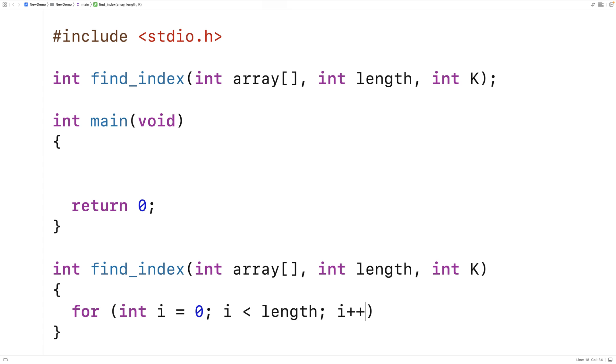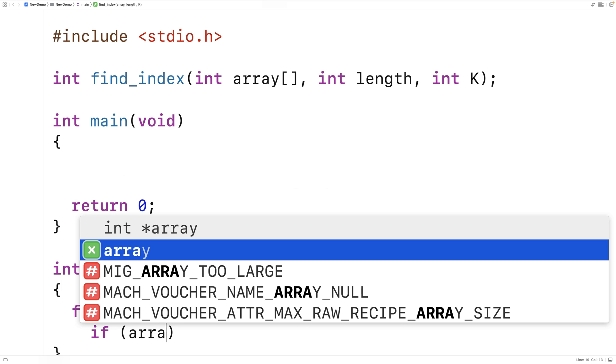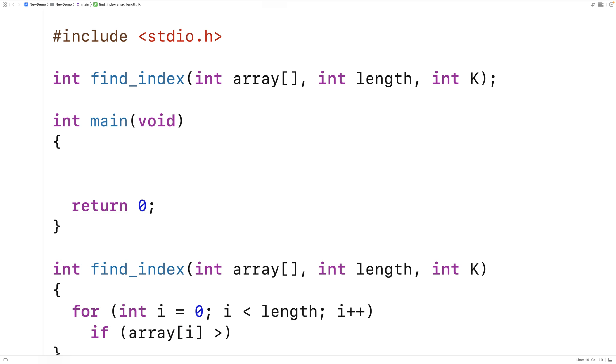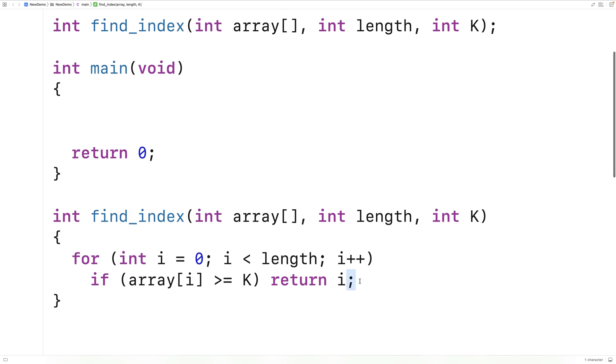And so this loop is going to go through each element in the array, starting off at the first index, and going up to the last element in the array. And what we're going to check for is that property we found. If the array element is equal to K, then we found the position. But if the array element is greater than K, we found where K needs to go. So we'll check for both those properties at once. We'll say if the array at index i is greater than or equal to K, then we're going to return the index i. So this piece of code here is going to solve most of the problem right here.